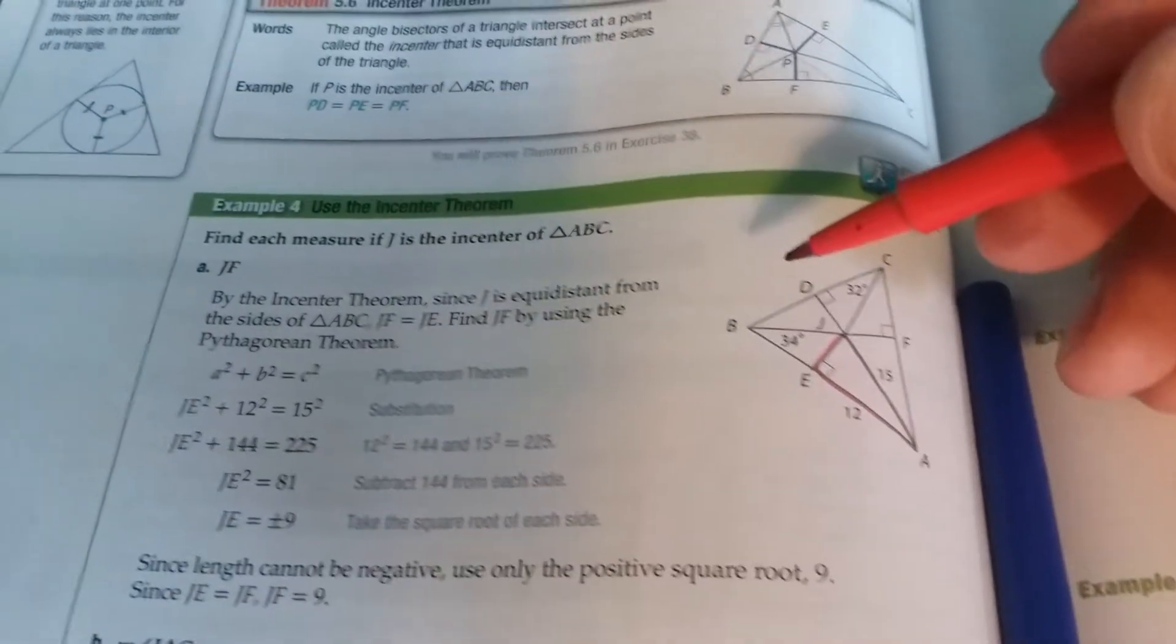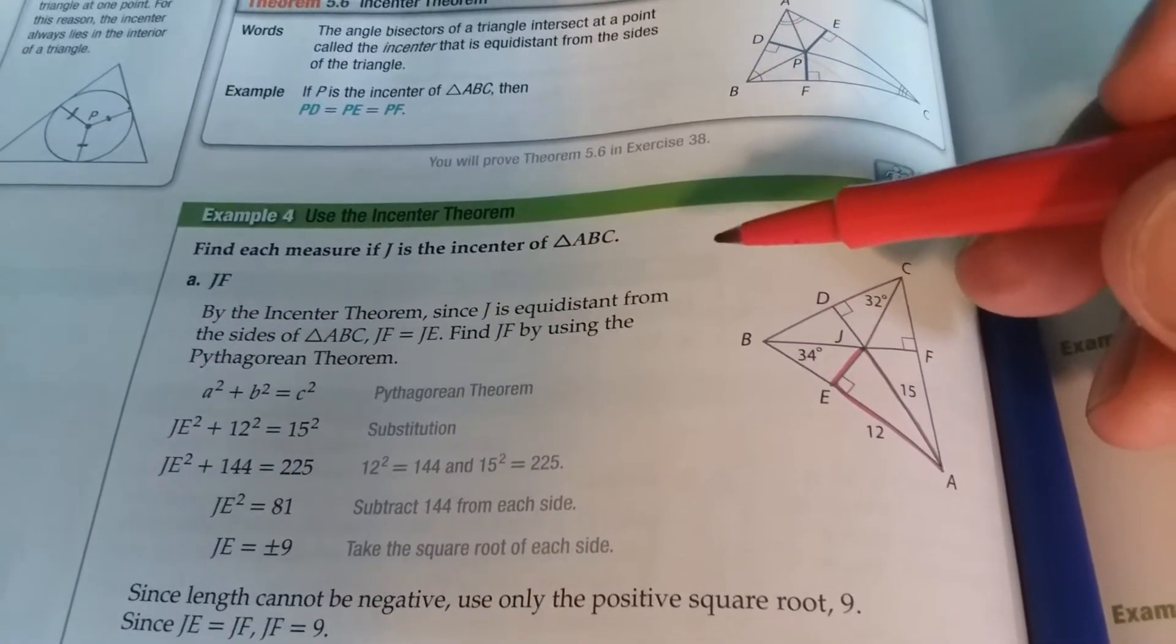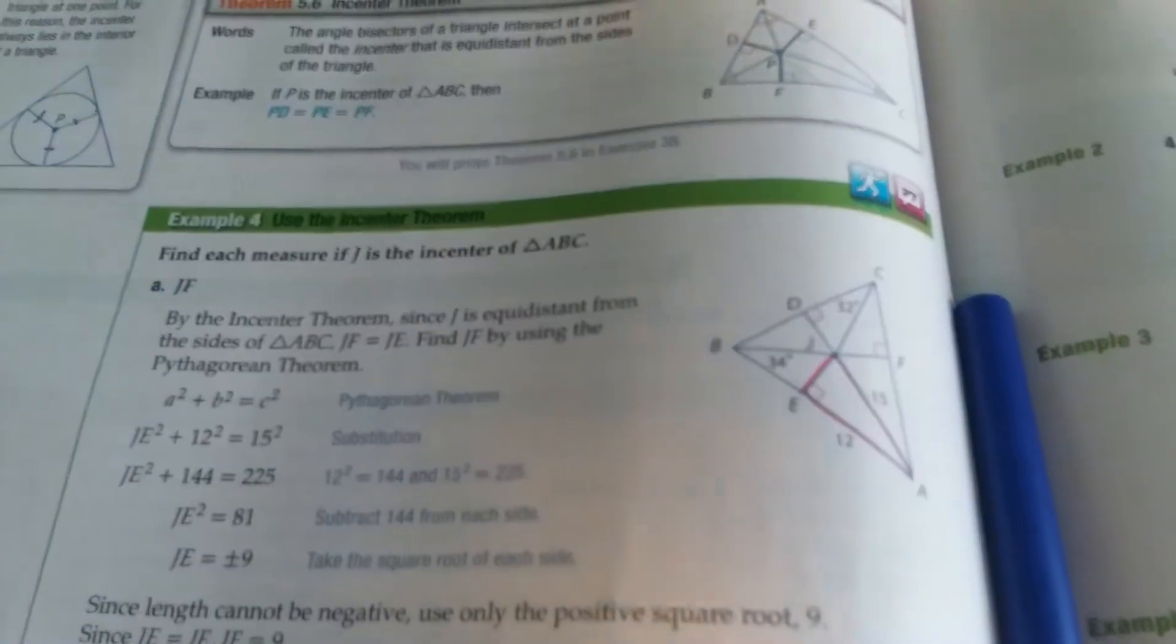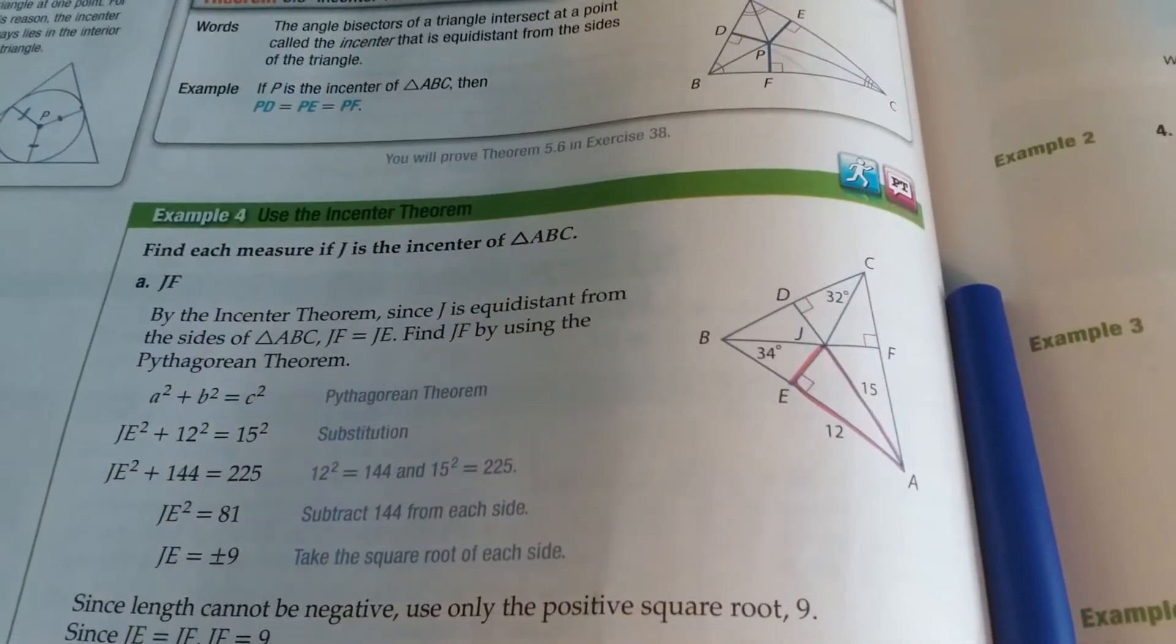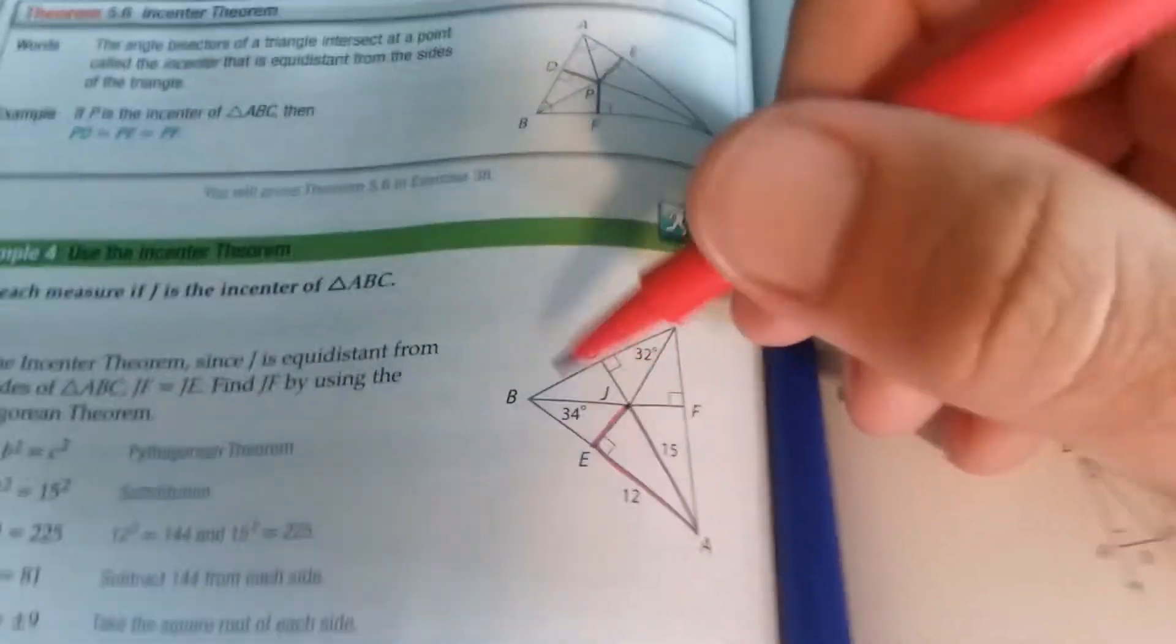Okay, let's look at our first example here, example four. Use the in-center theorem. Find the measure of if J is the in-center of ABC, triangle ABC. So if J is the in-center, that means that JF and JE are the same.